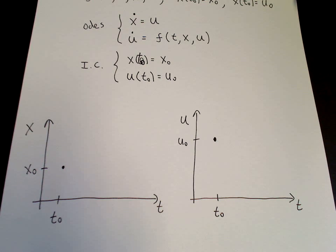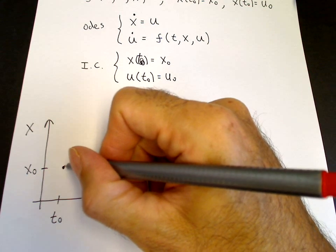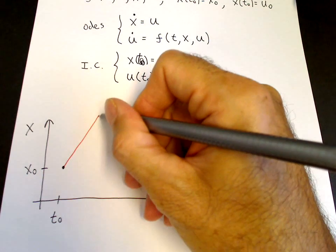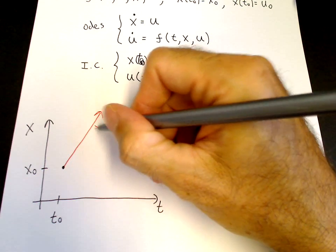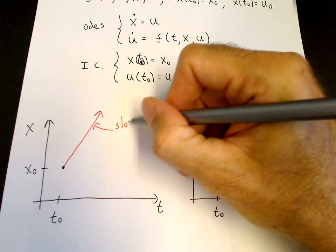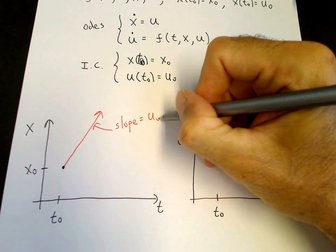So we draw the tangent line. So here it's positive. So here that can be the tangent line. And the slope of this line is our u naught.